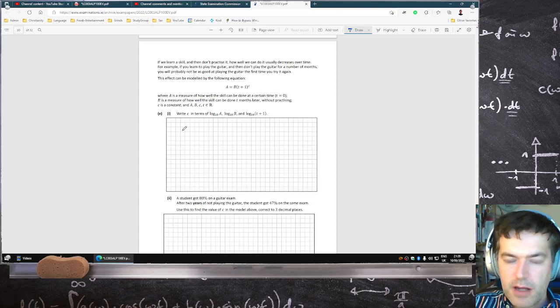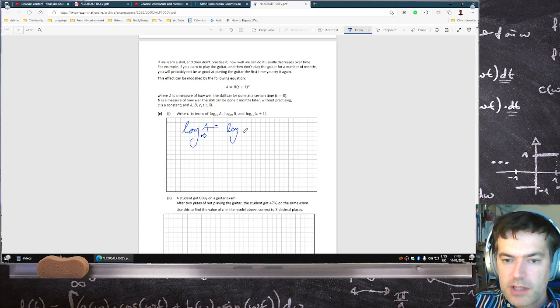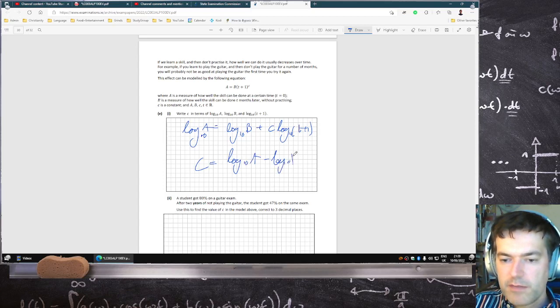Here we log 10 everything. Log 10 of A equals log 10 of B plus, then the C comes down, log 10 of T plus 1. So you get C is log 10 of A minus log 10 of B over log 10 of T plus 1.